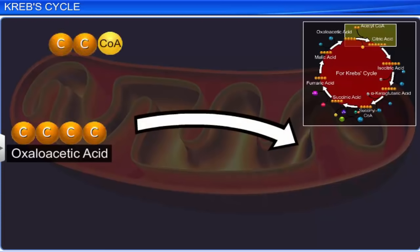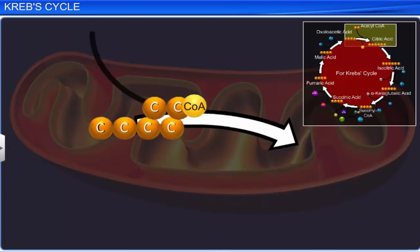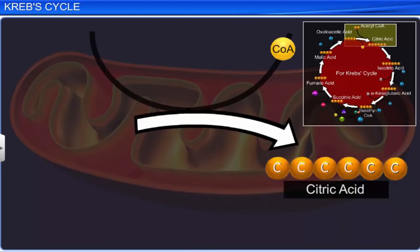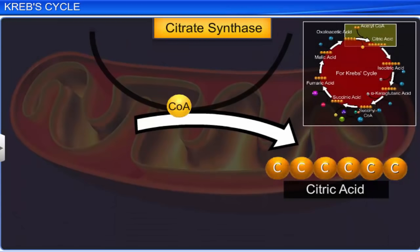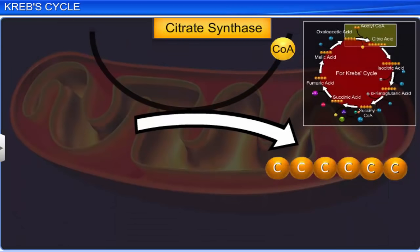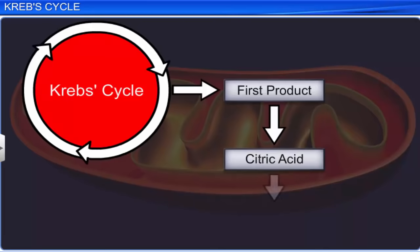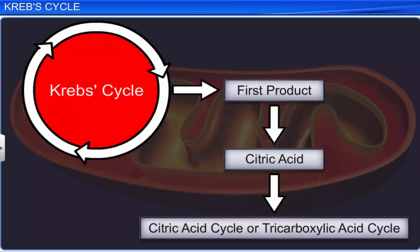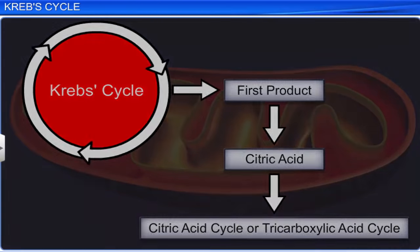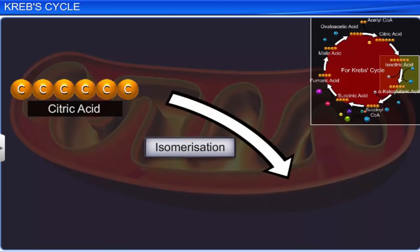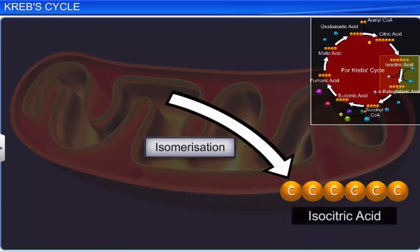Krebs cycle starts with the reaction of acetyl coenzyme A with oxaloacetic acid to form citric acid, catalyzed by the enzyme citrate synthase, with the release of coenzyme A. The first product of Krebs cycle is citric acid, and hence the cycle is also called the citric acid cycle or the tricarboxylic acid cycle. The citric acid thus formed isomerizes to form isocitric acid. The isocitric acid is then oxidized in the presence of NAD+ to form oxaloacicinic acid, which is later decarboxylated to form alpha-ketoglutaric acid.